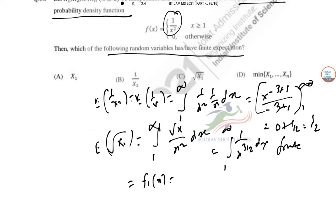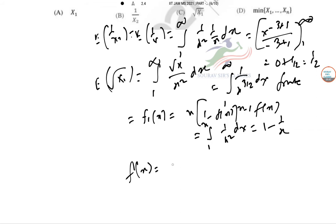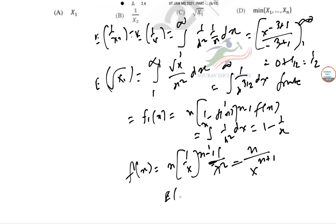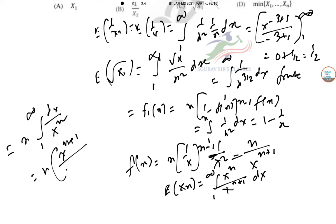For the order statistic Xₙ (maximum), the CDF of X is F(x) = 1 − 1/x, so the pdf of Xₙ is f_{X_n}(x) = n · [F(x)]^{n−1} · f(x) = n · (1 − 1/x)^{n−1} · (1/x²). The leading term gives n/x^{n+1}, so E[Xₙ] = ∫₁^∞ x · (n/x^{n+1}) dx = n · ∫₁^∞ x^{-n} dx = n/(n−1), which is finite for n > 1.